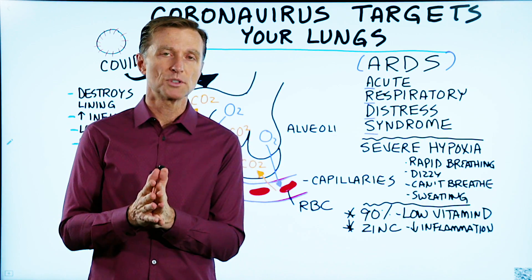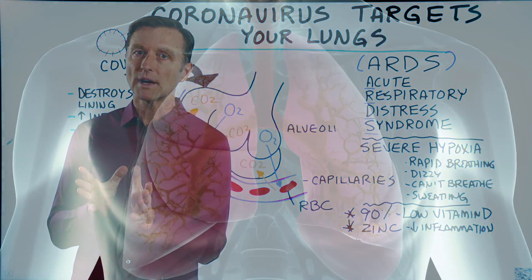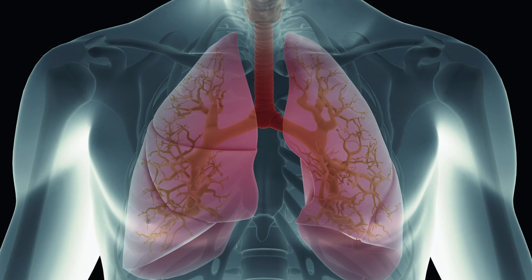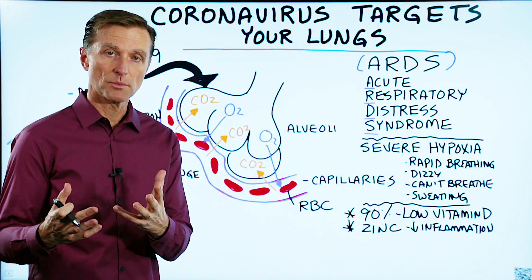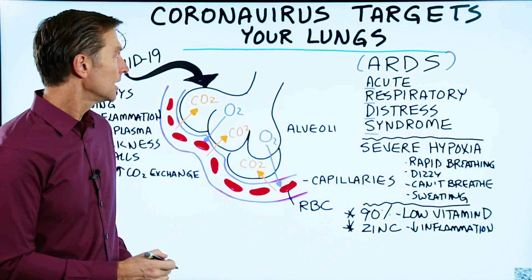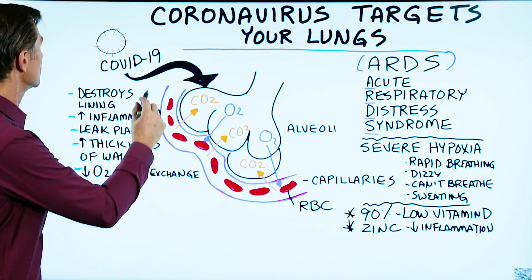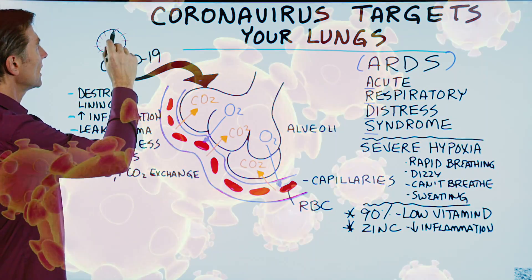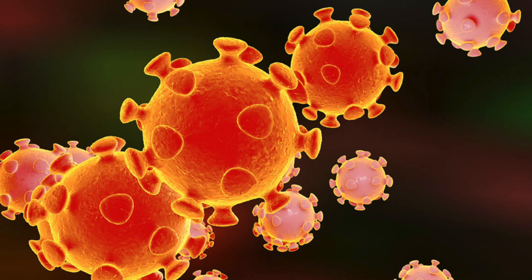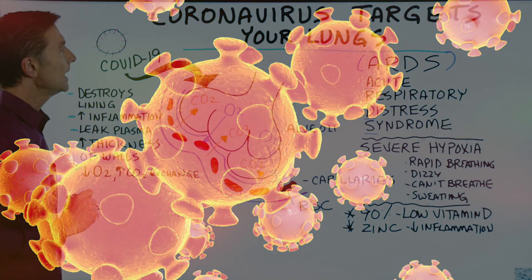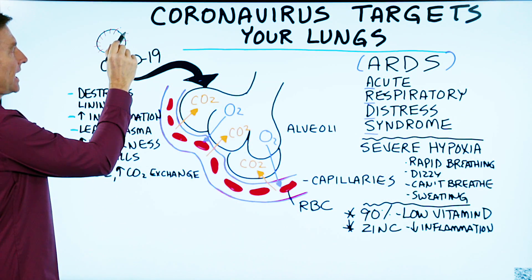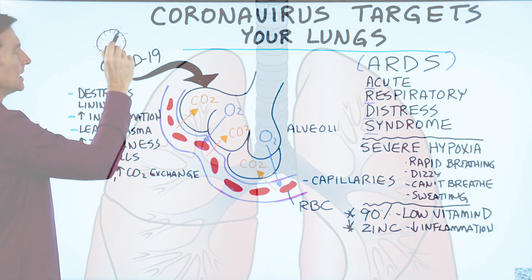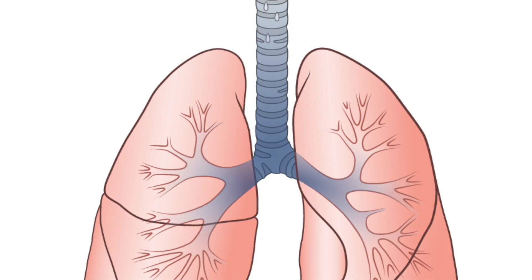Today we're going to talk about the relationship between coronavirus and your lungs. The word corona comes from a crown because the coronavirus has these little projections that look like a little crown. And these little projections have affinity for lung tissue.